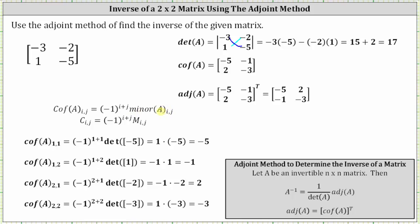To begin, cofactor A sub 1,1 is equal to negative 1 raised to the power of 1 plus 1 times the corresponding minor. To find the minor, we eliminate row 1 and column 1. Notice how this results in a 1 by 1 matrix with an entry of negative 5, and therefore the minor is the determinant of that 1 by 1 matrix. The determinant of a 1 by 1 matrix is always the entry itself.